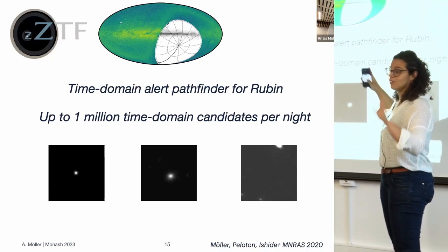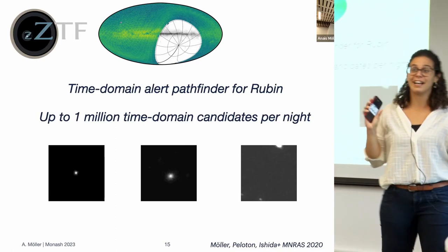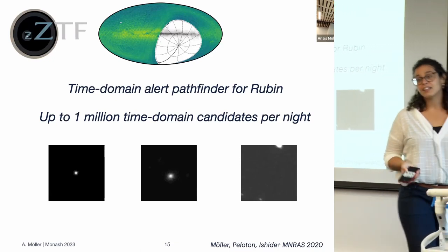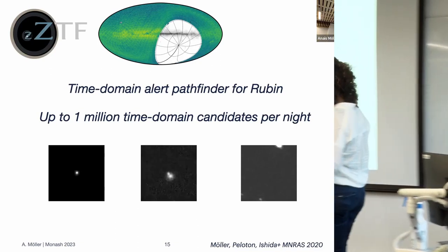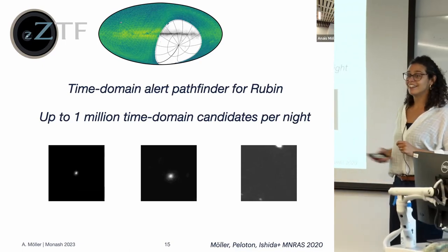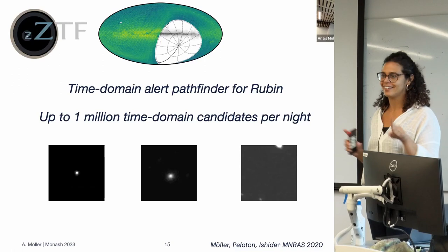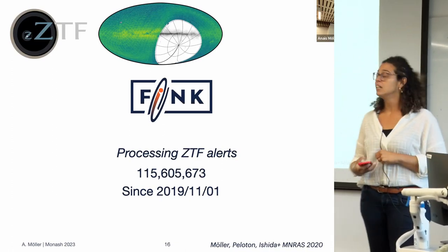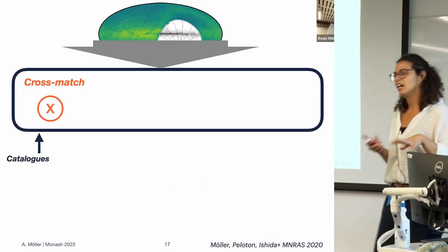Let's start with ZTF. These are the alerts of ZTF — detecting up to one million candidates every night, an order of magnitude less than Rubin. These are real images: a variable star, a supernova, and an asteroid passing by. This is the data we're working with — not beautiful Hubble images, but very rich data that we can do a lot with. We have processed over 100 million alerts since 2019.